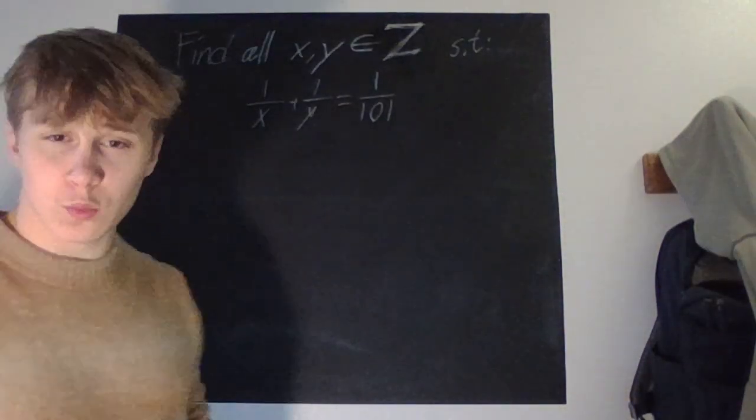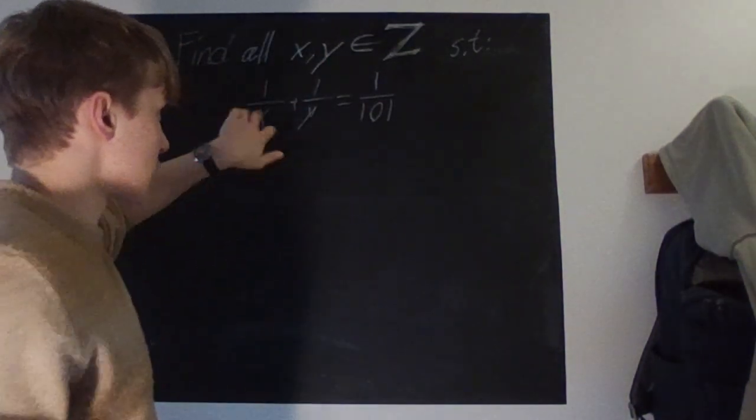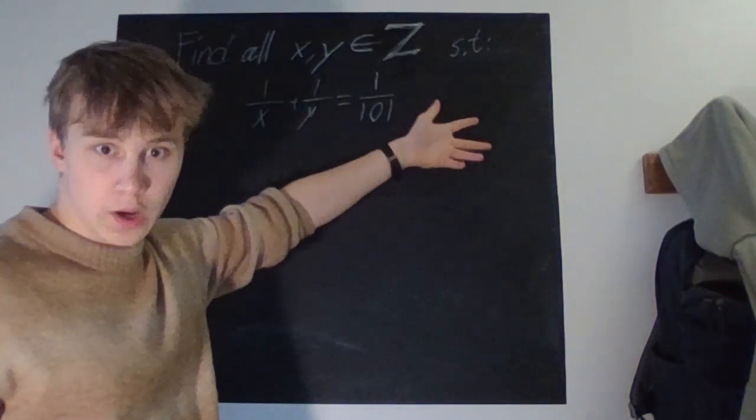How do we do this? Well, we obviously start by multiplying by all the denominators everywhere. So, 101xy.